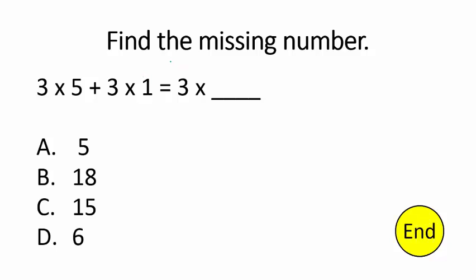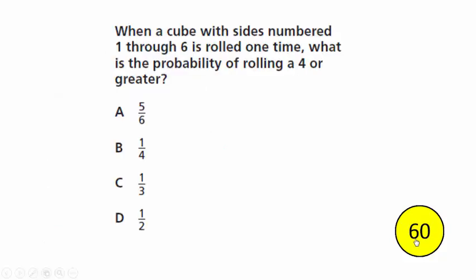Find the missing number. Solve the left side: 3 times 5 is 15; order of operations — 3 times 1 is 3; 15 plus 3 is 18. We need whatever is on this side: 3 times some unknown number has to equal 18. Well, 3 times 6 is 18. Choice D.